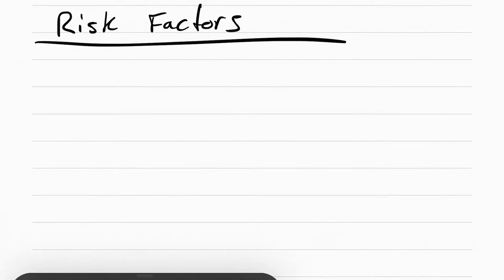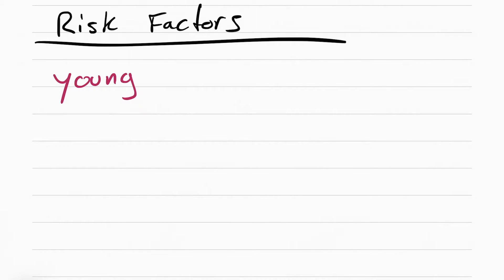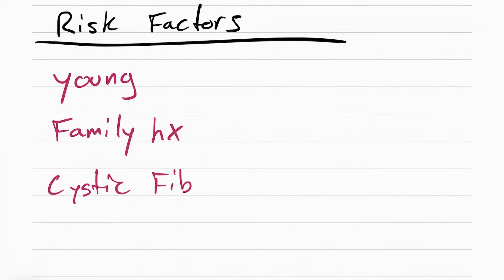The person at risk for getting appendicitis is going to be a young person that has a family history of appendicitis and has cystic fibrosis.